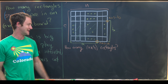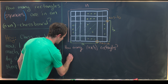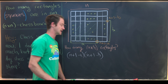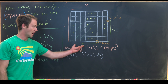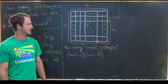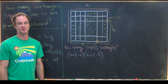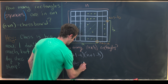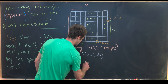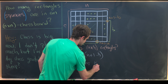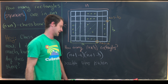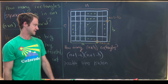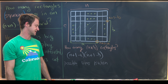Similarly for the vertical endpoint, there are n plus 1 minus b total choices. So putting that all together, there are (n + 1 − a) times (n + 1 − b) total rectangles of size a by b. Now we just need to sum over all possible sizes, where a and b each range from 1 to n.